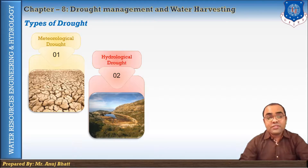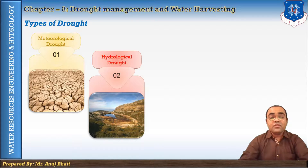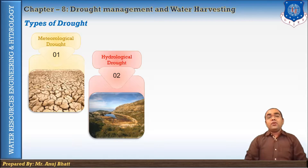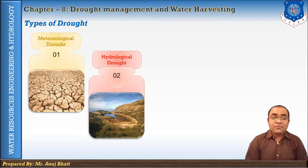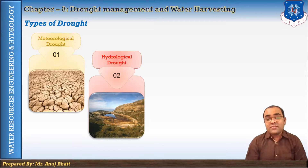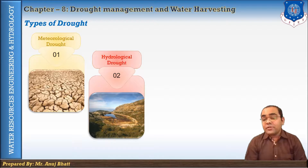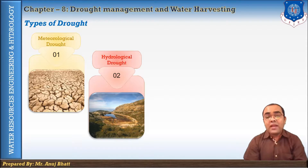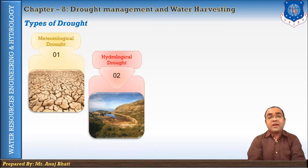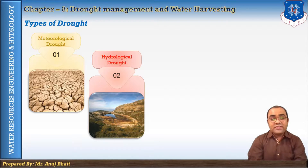Hydrological droughts are usually noticed some time after the occurrence of meteorological droughts, because precipitation deficiencies must first be detected in reservoirs, groundwater, and other components of the hydrologic system. As a result, the impact of hydrological droughts is out of phase with other drought types. Water in hydrological storage systems such as reservoirs, rivers, and groundwater is often used for multiple competing purposes, complicating the quantification of impacts.